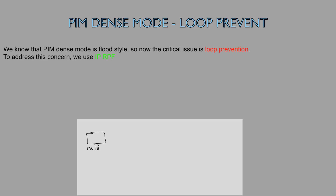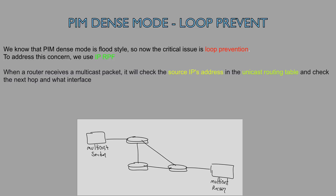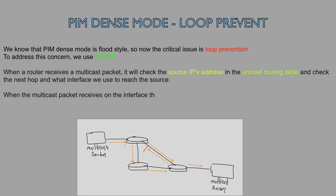When a router receives a multicast packet, it will check the source IP address in the unicast routing table and check the next hop and what interface we use to reach the source. When the multicast packet arrives on the interface that we use to reach the source, the RPF check succeeds and we are good to go.